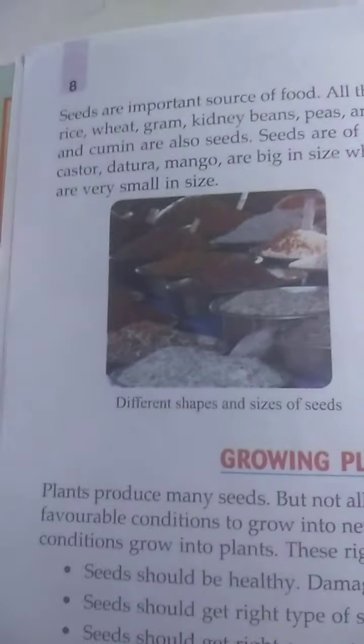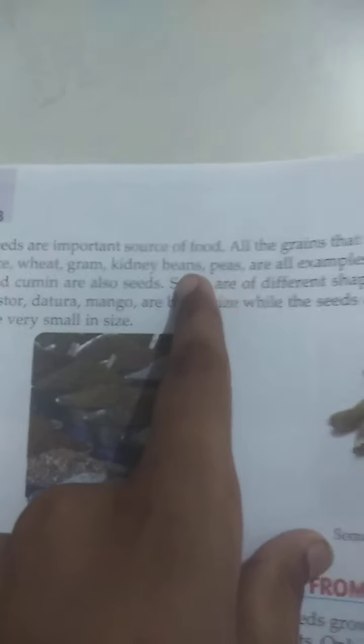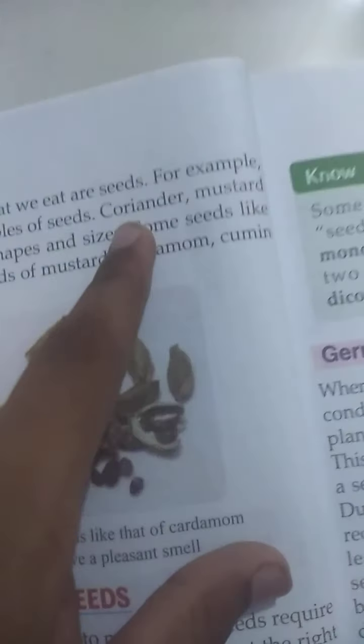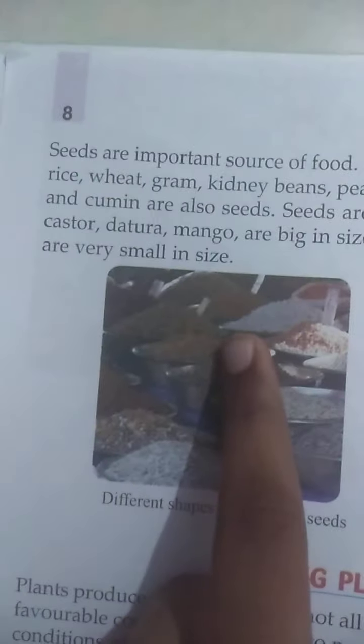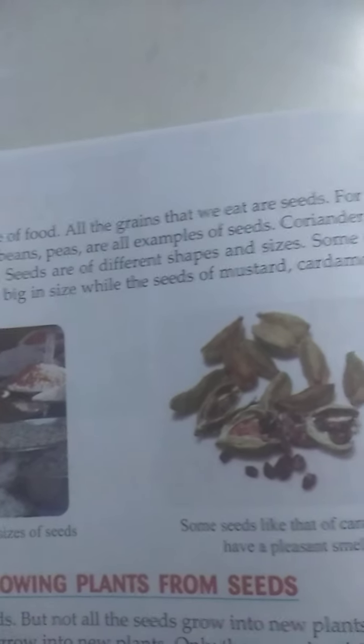Seeds are important sources of food. All the grains that we eat are seeds. For example, rice, wheat, gram, kidney beans, and peas are all examples of seeds. Coriander, mustard, and cumin are also seeds. Seeds are of different shapes and sizes.